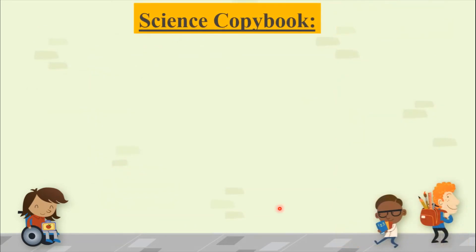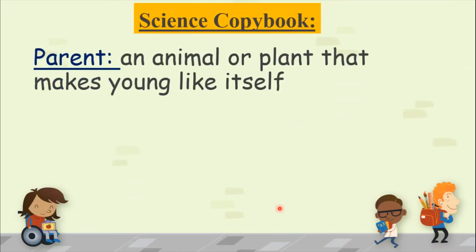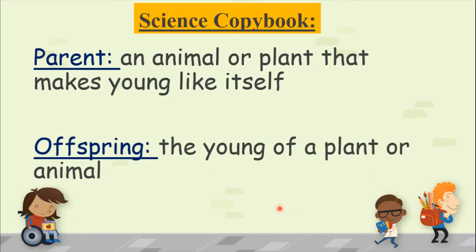We wrote in our science copybooks: a parent is an animal or plant that makes young like itself. Offspring is the young of a plant or animal.